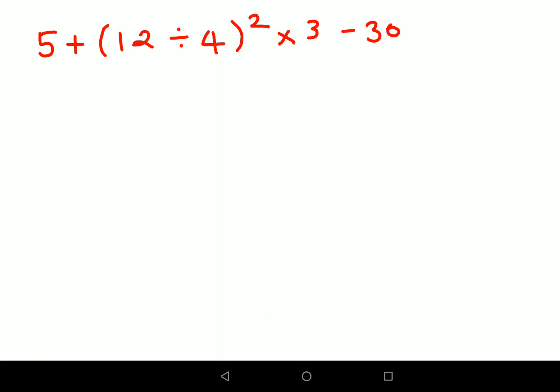Welcome everyone. Today we are going to solve this particular question which looks quite interesting. Here we have 5 plus 12 divided by 4, the whole square, times 3 minus 30, and we need to find the value of this.